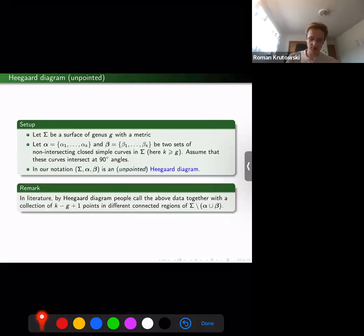Such a collection would, for the rest of the talk, be called a Heegaard diagram. Sometimes in literature it's called an unpointed Heegaard diagram, because to associate the three-manifold, one actually needs to pick some points in regions where regions are connected components of the complement in sigma of these alpha and beta curves.